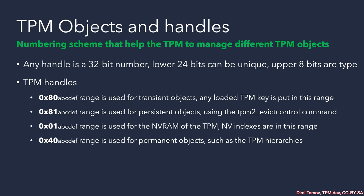When you use the tpm2_evictcontrol command, the handle in the output starts with 0x81 in hex — that's a persistent object. NVRAM indices, used in exercises about NV indices and NV counters, start with 0x01. We need to know about handles now that we're using the API, because in certain operations — like when creating a child key — we need to provide the TPM with the index of the primary object's key slot so the TPM can generate and wrap the child key. You won't need to memorize all these numbers, but during debugging it helps to recognize the beginning of an index to understand what you're looking at.